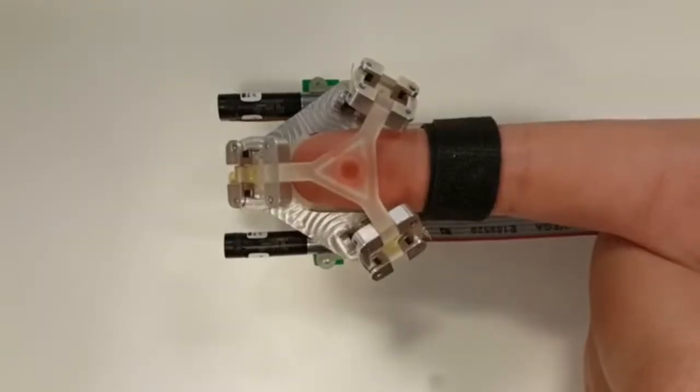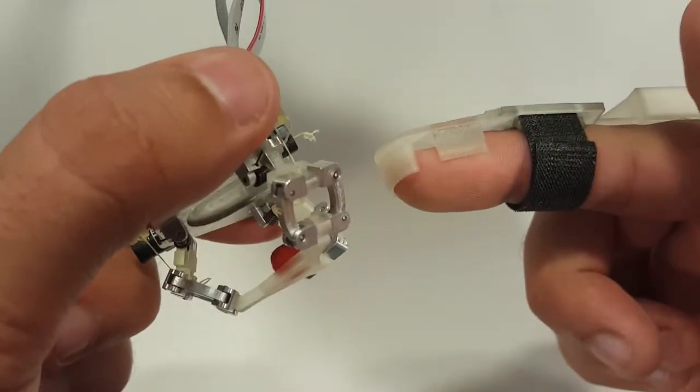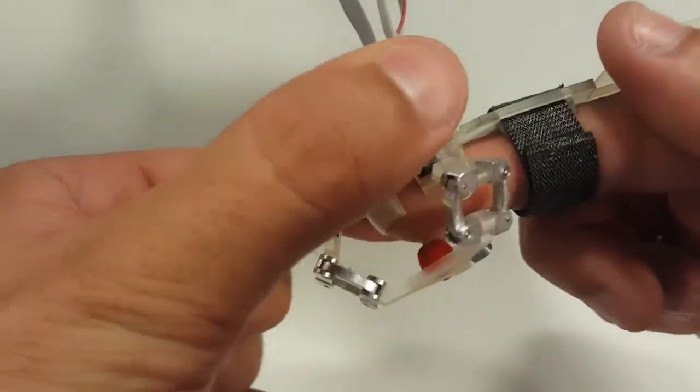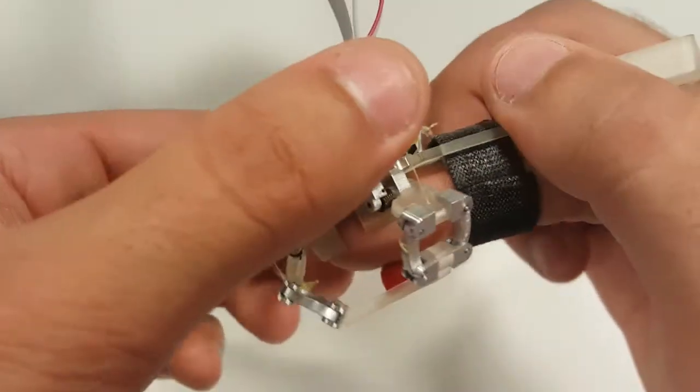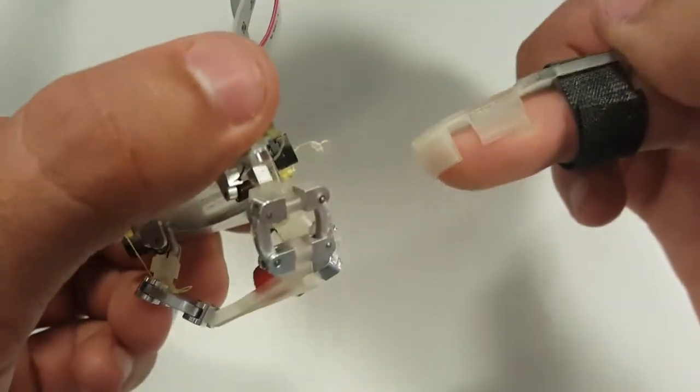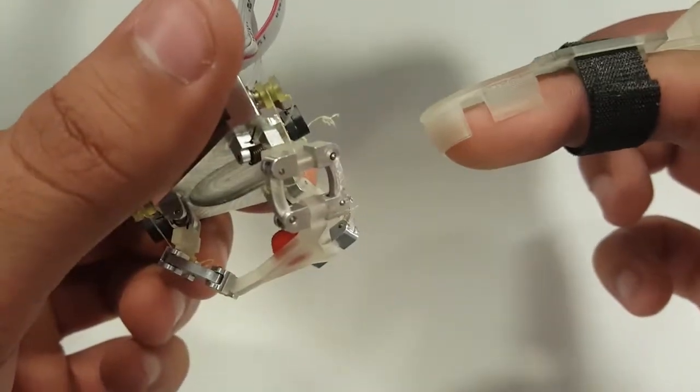HapDips is a tactile feedback device that is worn on the fingertip. It is easy to put on and take off and lets users interact with a virtual environment directly with their hands.